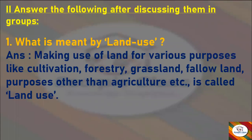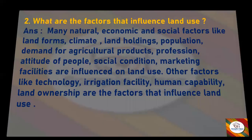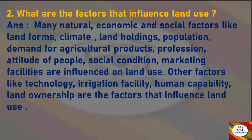The first question is: What is meant by land use? Answer: Making use of land for various purposes like cultivation, forestry, grassland, fallow land, and purposes other than agriculture etc. is called land use. Next question: What are the factors that influence land use?